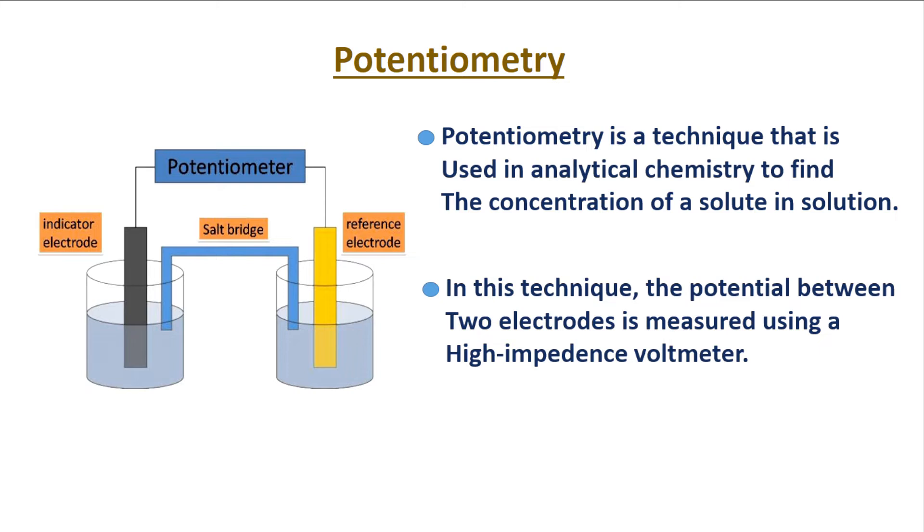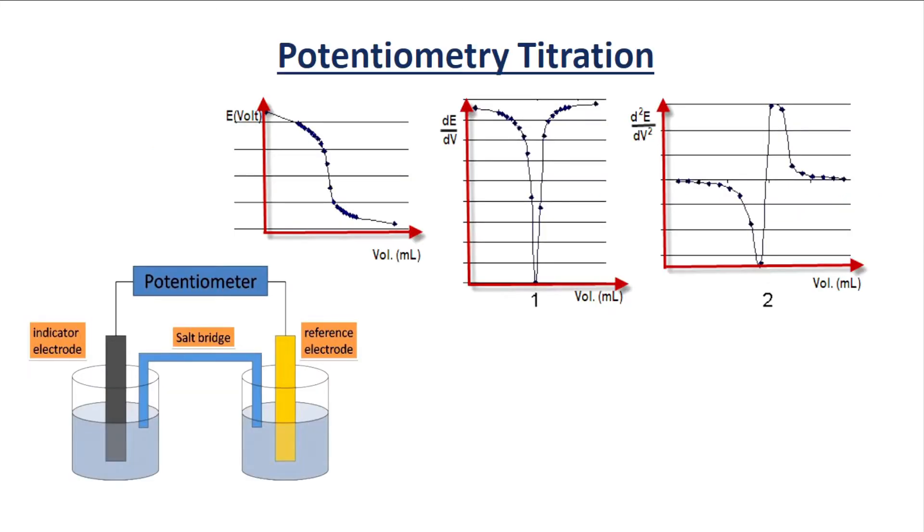Potentiometric titration is a similar technique to direct titration or redox reaction. The difference between direct redox titration and potentiometric titration is that in potentiometric titration, no indicator is used. Instead, potential is measured across the analyte that is in solution. For this, two electrodes are used: an indicator electrode and a reference electrode.